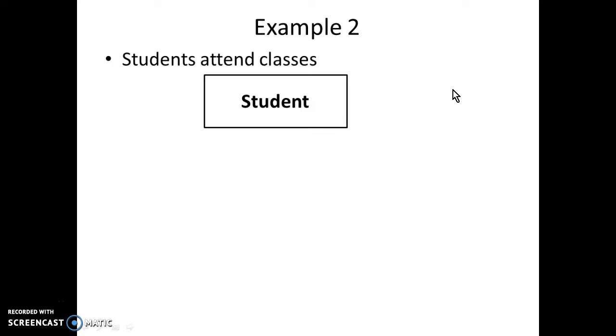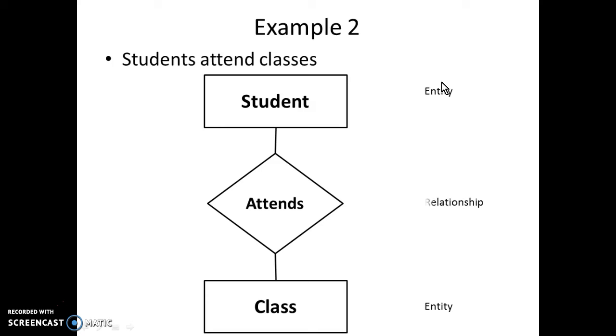Obviously student and classes are nouns and attends is a verb. So, student and class become entities and attends become relationships. You can notice over here students, the s is not included in this entity. Classes, the es is not included in this entity name. So, entity name we keep it as singular only.